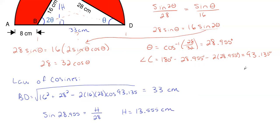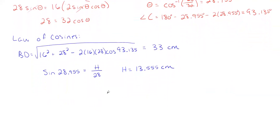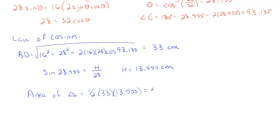With the height and base of the triangle known, I can find the area of the white triangle. Area = ½ × base × height = ½ × 33 × 13.555, which gives a total of approximately 223.6575 centimeters squared.